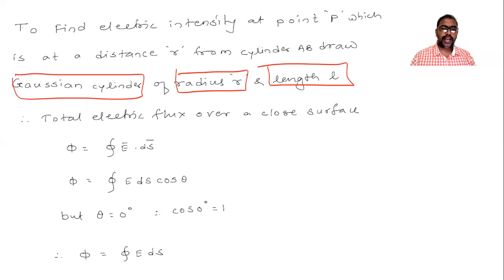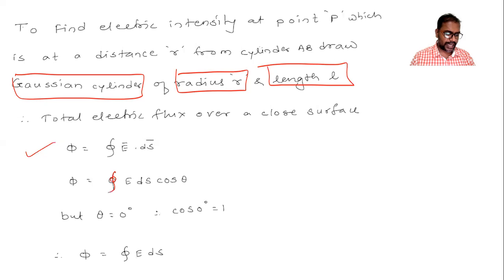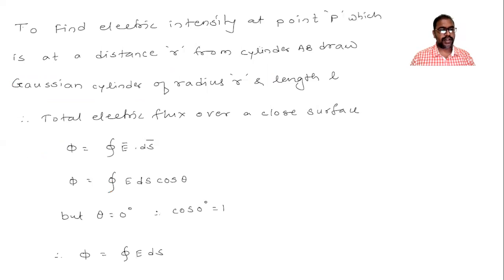The procedure is similar to the previous one: we write two formulas for electric flux — one by the basic formula and one by Gauss's law — and equate them. Electric flux is the integration over the closed surface of E dot dS, which equals integration of E dS cos θ. Here, cos θ equals cos zero equals one, since electric intensity and the area vector are along the same line.